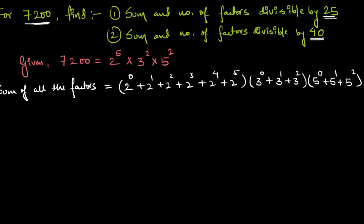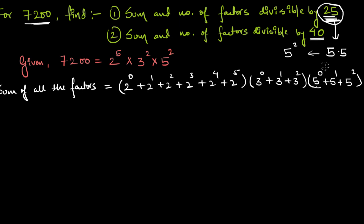We are asked to find the sum of only those factors which are divisible by 25. To get 25, we need at least two fives (5 × 5). So all terms must contain 5^2. To ensure this, I'll remove 5^0 and 5^1 from the expression, since for divisibility by 25 we need at least two fives.